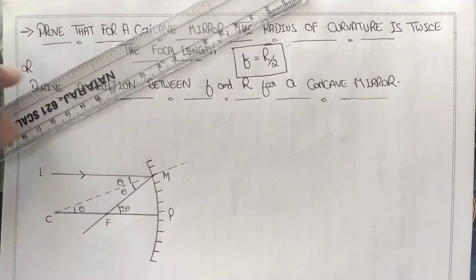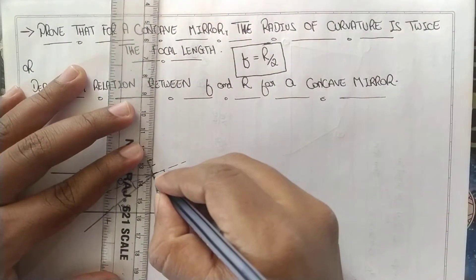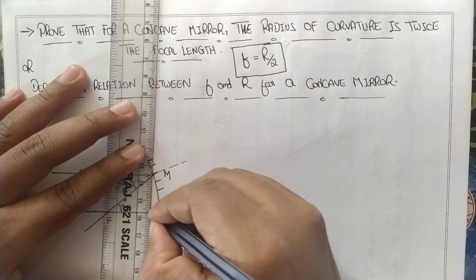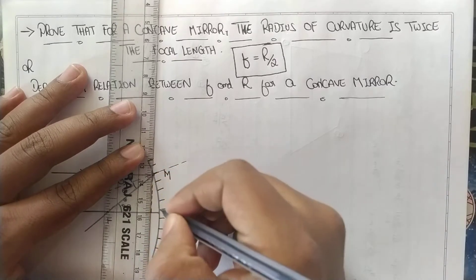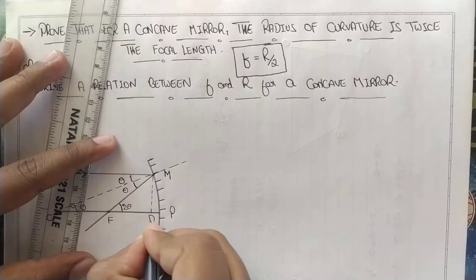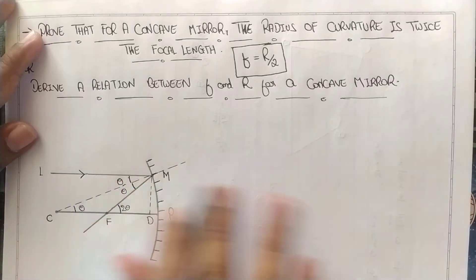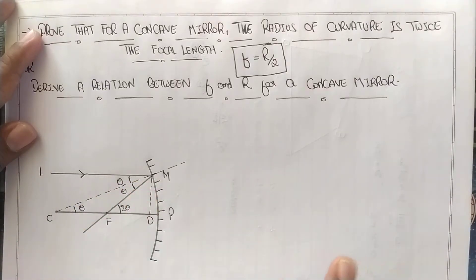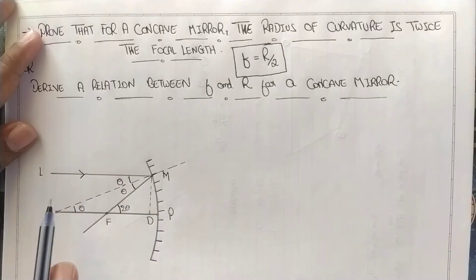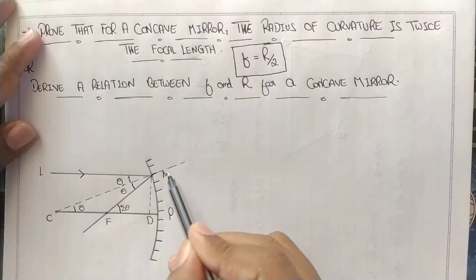Now another construction line is required, which is perpendicular from point M to the principal axis. Let us annotate this as D. Now our construction is complete. The required elements are shown with solid lines and the construction parts with dotted lines.